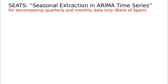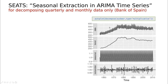The next method was created by the Bank of Spain and it's called SEATS, which is an acronym for Seasonal Extraction in ARIMA Time Series. It's a kind of cheating because it uses ARIMA — which we'll cover in another video — to extract the trend and the seasonal part, and then performs the decomposition.